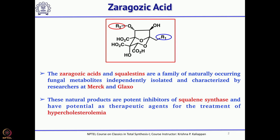Xeragosic acids and squalistatins both belong to the same family of naturally occurring fungal metabolites and were independently isolated and characterized by researchers at Merck and Glaxo.